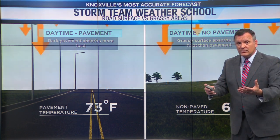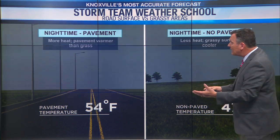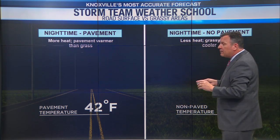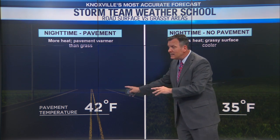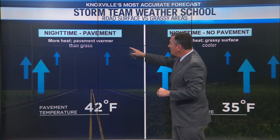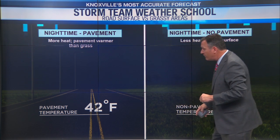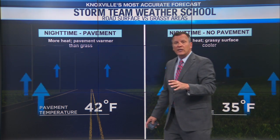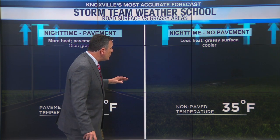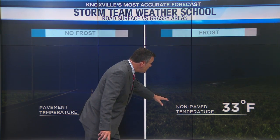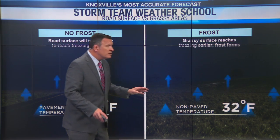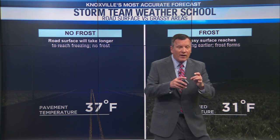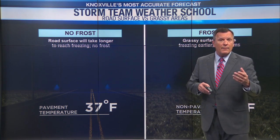But then as the sky is clear at night and that heat radiates away, the pavement actually maintains some of the heat — it stays warmer than the grassy surfaces. The grassy surfaces will drop down to near or below freezing. And therefore, you may see frost form on the grassy surfaces when the air temperature at the grass level is down below freezing.